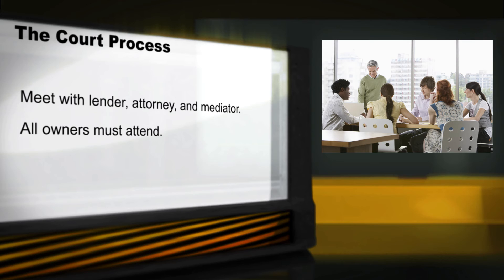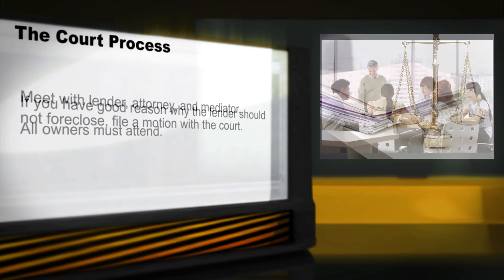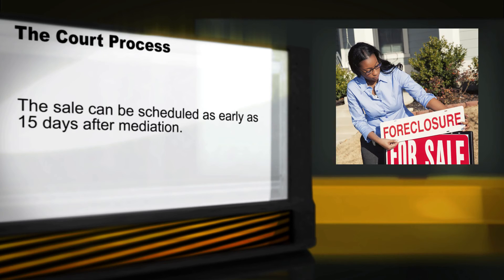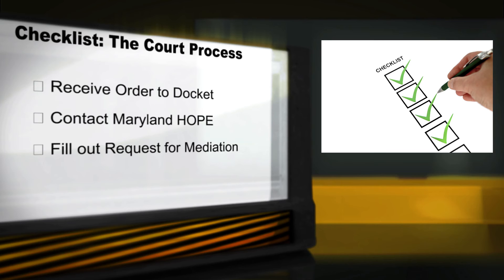If you do not reach an agreement in mediation, the lender can schedule your house for a foreclosure sale. If you think you have a good reason why the lender should not be permitted to foreclose on your home, immediately file a motion with the court. The sale can be set as early as 15 days after mediation occurs. Let's review a checklist of the steps you may take during the first stages of the foreclosure process: Did you receive the order to docket in the mail? Did you contact Maryland HOPE? Did you fill out the request for mediation? Did you submit the mediation request on time and pay the fee? Did you watch the video, Foreclosure Mediation?